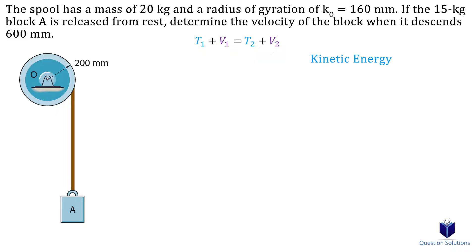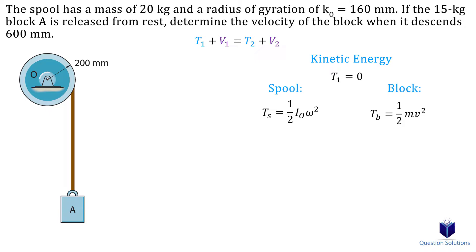The initial kinetic energy is zero since everything starts from rest. To find the final kinetic energy, we have the kinetic energy of the spool and the kinetic energy of the block. For the spool, since it's a rotation about a fixed axis, we use the rotational kinetic energy equation. To use this formula we need the mass moment of inertia: k is the radius of gyration, the mass is 20 kilograms, and the radius of gyration is 0.16 meters.